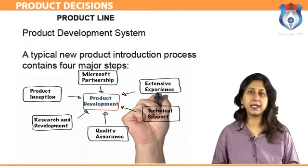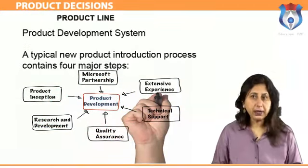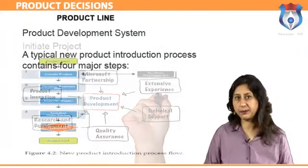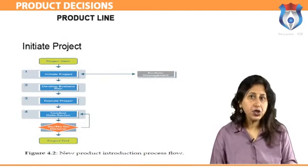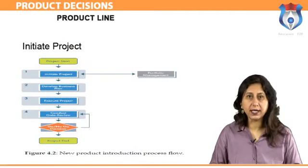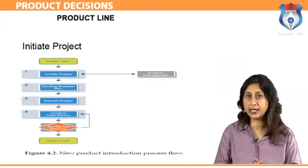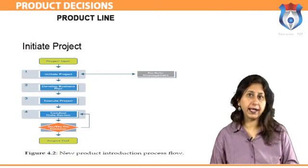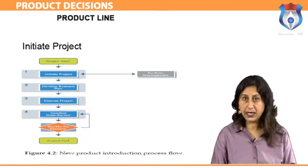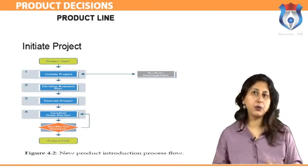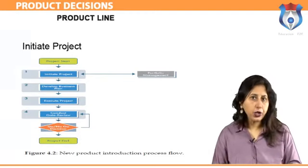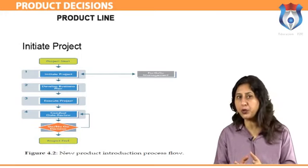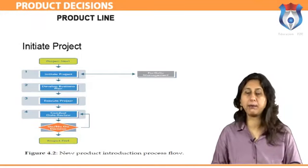A typical new product introduction process contains four major steps. Step 1 — Initiate project: the initial step of the NPD process is to properly start and manage the project and its deliverables. An initial project plan is developed from a template based on best practices and benchmark data. Resource planning and trade-off studies are performed to identify potential outsource and offshore development opportunities.